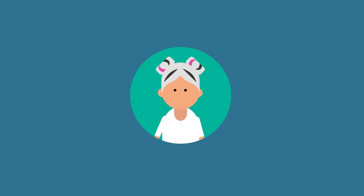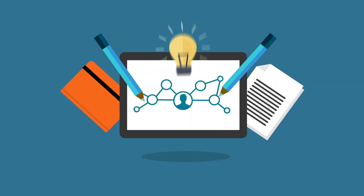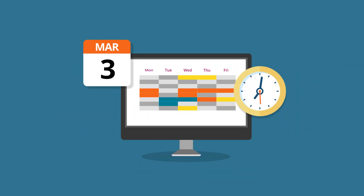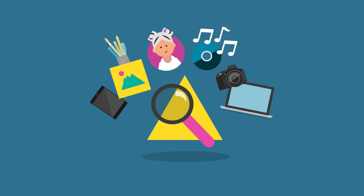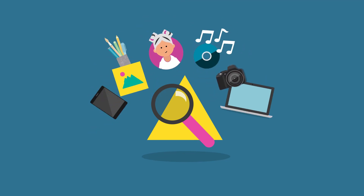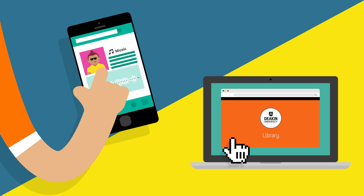Firstly, you will need to create a draft outline or plan. This could be a storyboard, script, mind map or schedule. Identify the resources you will need such as images, music, people or equipment. Choose the software or online tool you will use. As a Deakin student you will have access to a range of platforms.